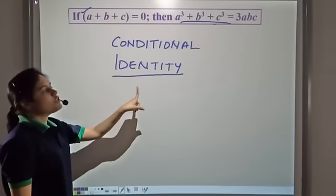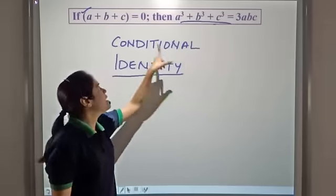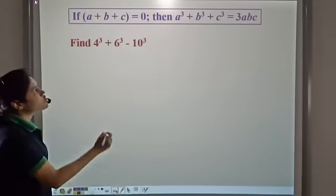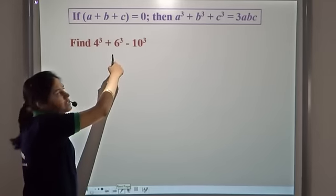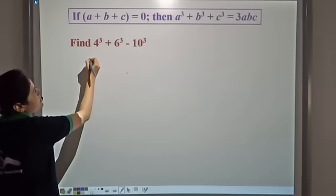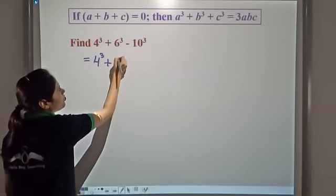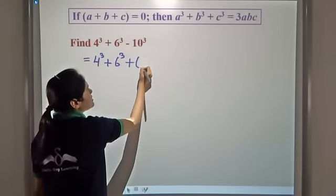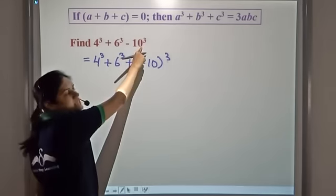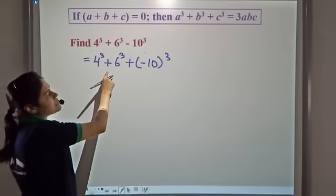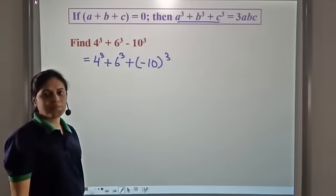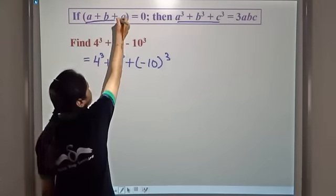We can use it to find the sum of the cubes of three numbers if the numbers are such that their sum is equal to zero. So if we have to find 4 cube plus 6 cube minus 10 cube, how can we find it using this? Notice that this can be written as 4 cube plus 6 cube plus (negative 10) whole cube, because negative 10 whole cube is equal to minus 10 cube. So this is the sum of the cubes of three numbers.